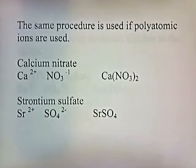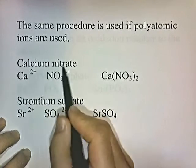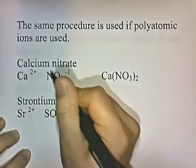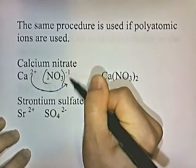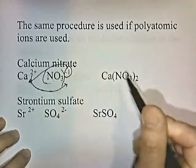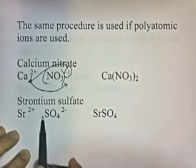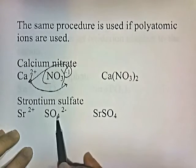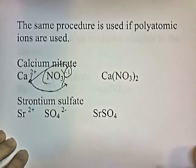The same procedure applies with polyatomic ions. Calcium nitrate: calcium is Ca2+, nitrate is NO3 with a negative one charge — crisscross gives Ca(NO3)2, two nitrates attached. Strontium sulfate: strontium is a group 2 element, sulfate is SO4 with a negative two charge — equal and opposite charges, so they just combine as SrSO4.